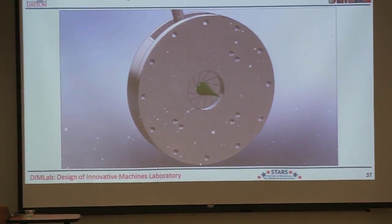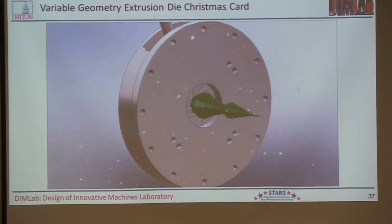And so now I have one more video and you need to think back to the variable geometry extrusion dies, where we shoot hot plastic through a variable geometry mechanism and make shapes. And so we've created a Christmas card.